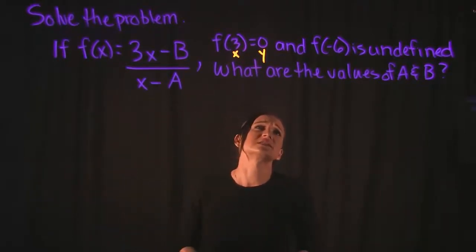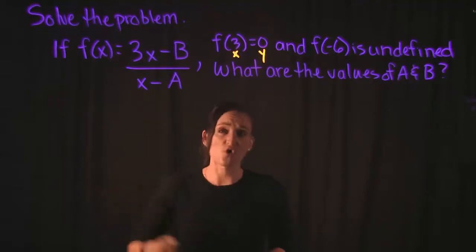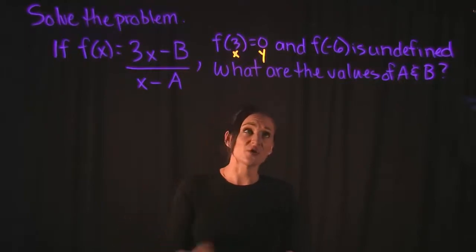The next thing it tells us is that f of negative 6 is undefined. So we need to think about what that means. If f of negative 6 is undefined, and taking a look at this function, this function is in fraction form. It is a rational expression. A fraction is undefined when the denominator equals 0.